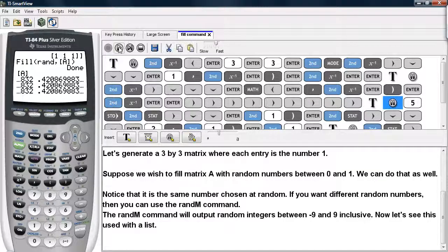If you want to generate different random numbers in these entries, you'd use the randM command. The randM command will output random integers between negative 9 and positive 9 inclusive.